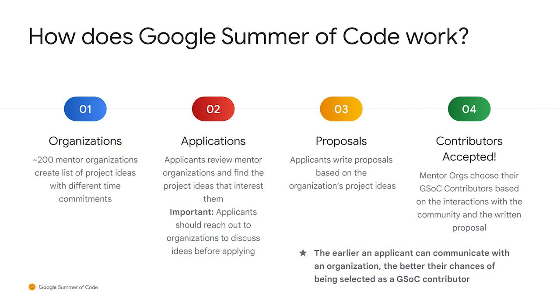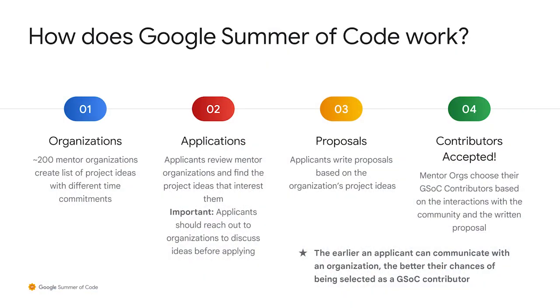Once Google has announced the mentor organizations, potential participants review the accepted organizations and look for project ideas that align with their interests. Applicants are encouraged to reach out to the mentor organizations before applying. This interaction is key to an individual being accepted into the program as a GSOC contributor. Applicants write proposals on the project ideas that interest them, and mentor organizations decide on their top participants by considering the participants' interactions with their community and their written proposals.